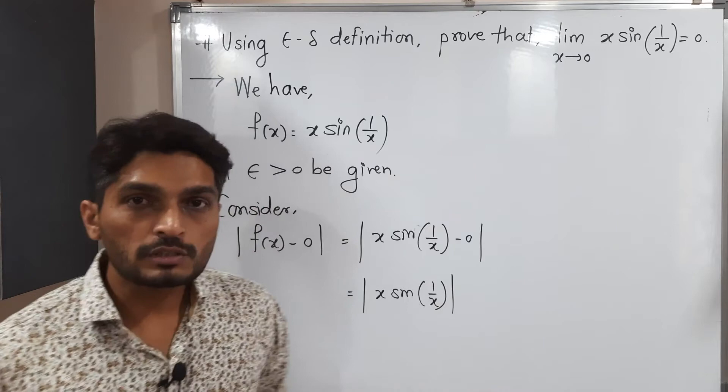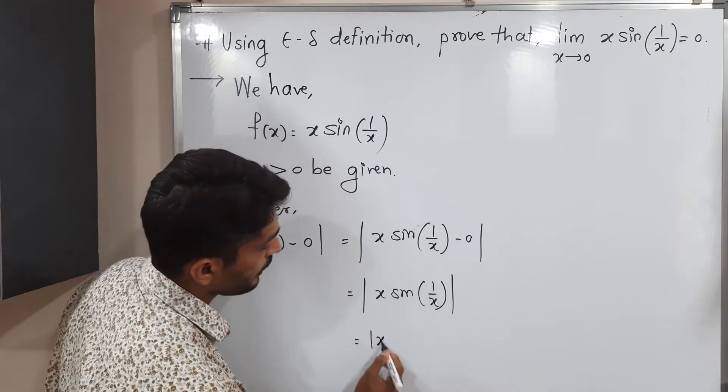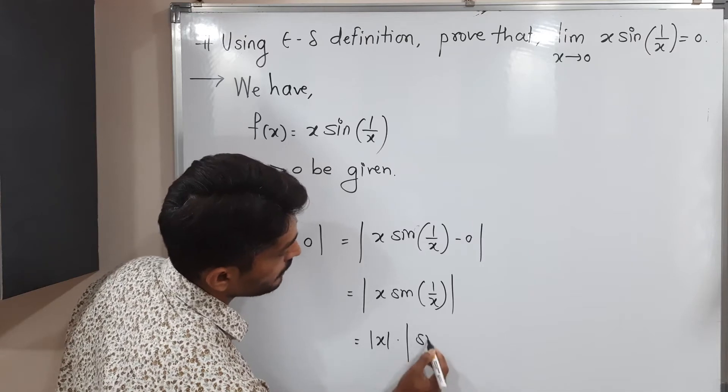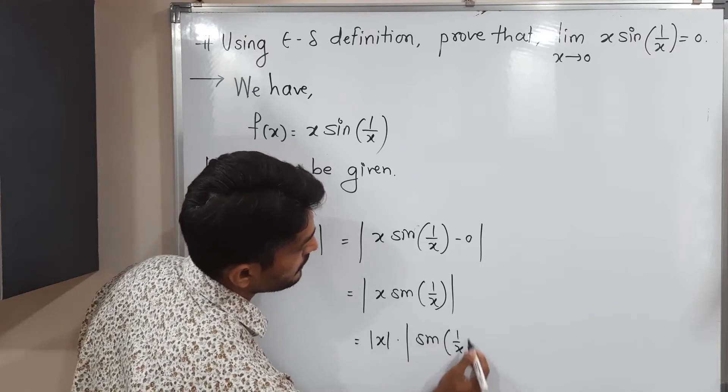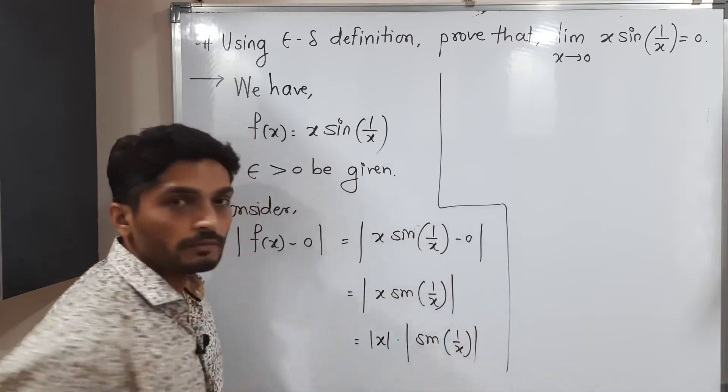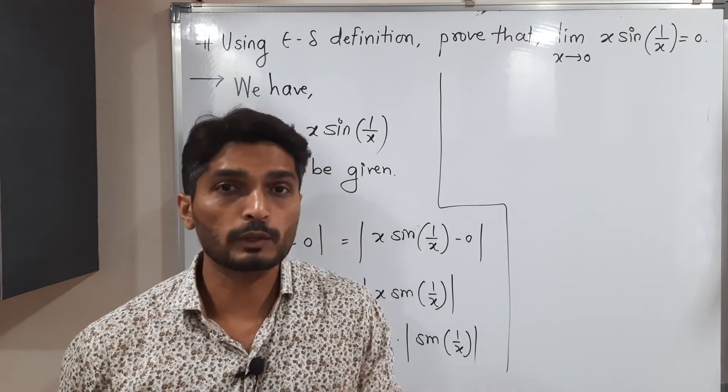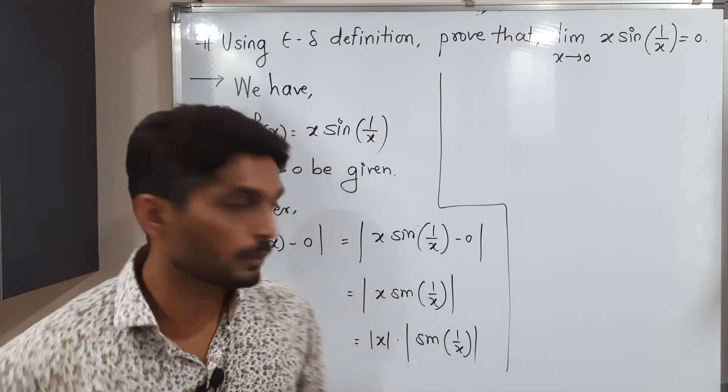If multiplication is there, we can take separate mod. Therefore, this is equal to mod x into mod sin 1 by x. But mod of sin theta is always less than or equal to 1. If you take mod of sin, whatever the angle, its value is always less than or equal to 1.